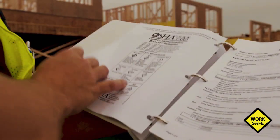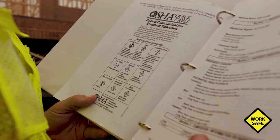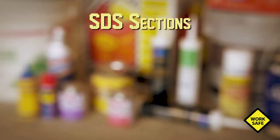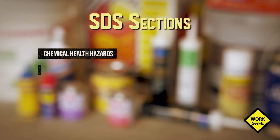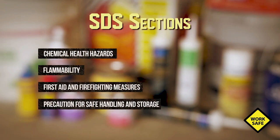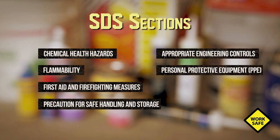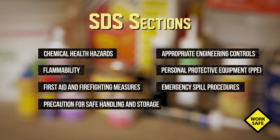SDSs have a uniform format and are divided into 16 sections. The SDS contains important information such as the chemical's health hazards and flammability, first aid and firefighting measures, precautions for safe handling and storage, appropriate engineering controls, personal protective equipment or PPE that is needed, and emergency procedures for spills.